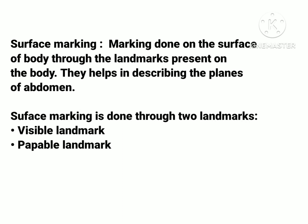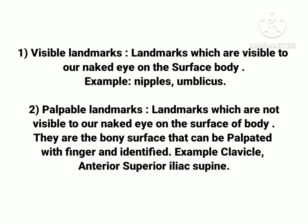The first type is visible landmarks — landmarks which are visible to our eyes. They are present on the surface of the body and we can see them very clearly. The second type is palpable landmarks. These landmarks are not visible to our naked eye and they are not present on the surface of the body, but they are present inside the body. They cannot be seen but they can be felt — we can palpate them with the help of a finger and identify them.